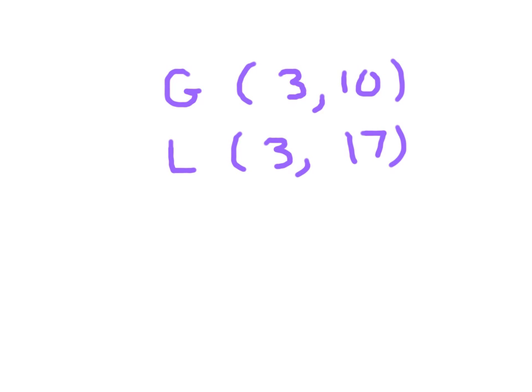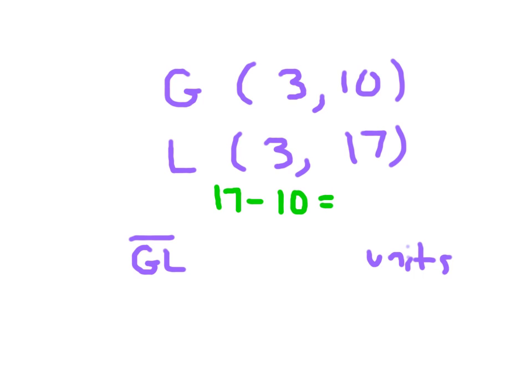Not always will you have a coordinate plane to be able to just count. You have to be able to figure out the lengths of line segments from just the ordered pair. In this case, the x-coordinates are the same, so we compare the y-coordinates of these ordered pairs. To compare 17 and 10, we subtract them — taking the larger number minus the smaller. 17 minus 10 is 7. So line segment GL is 7 units long.